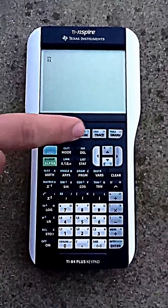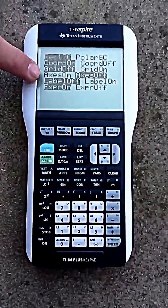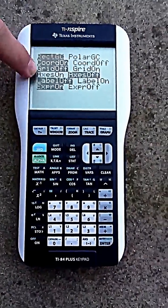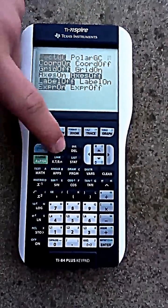First, you want to go to second format and go all the way down to axis on. It's going to be turned on, you want to turn it off. Then you're going to second quit.